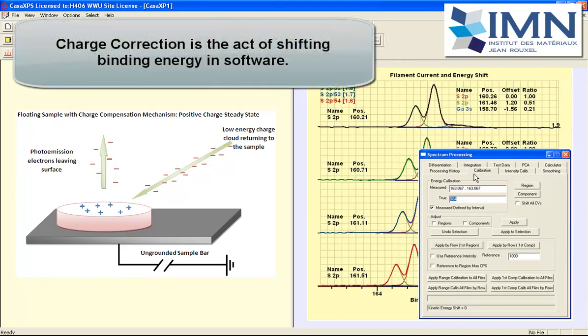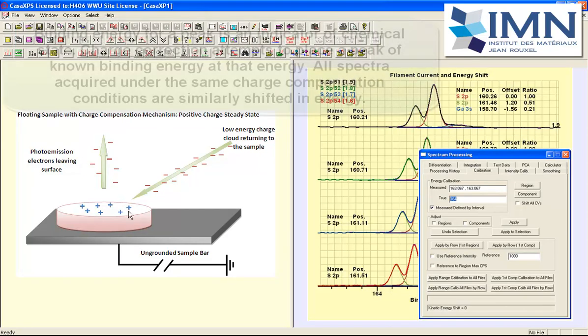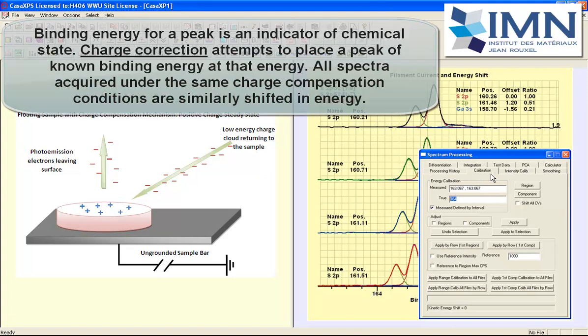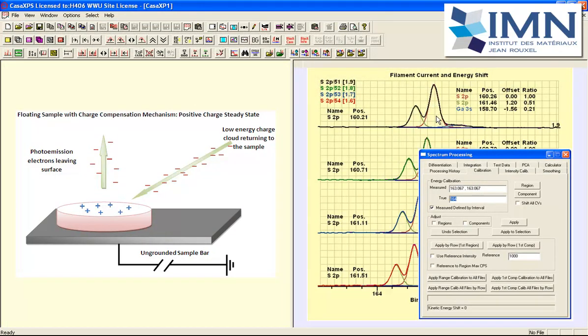In order to do an analysis for data such as these the software needs to be able to do charge correction. That is to say we need to shift peaks a known amount that is representative of the charge state that was established for the surface by the charge compensation. This video is going to look at the calibration property page of CASA XPS and how these features are used to charge correct spectra so an analysis can proceed.